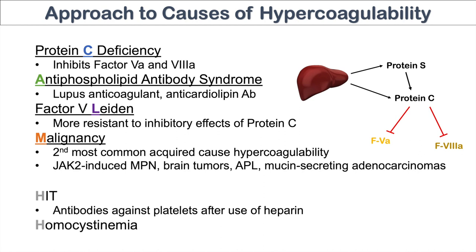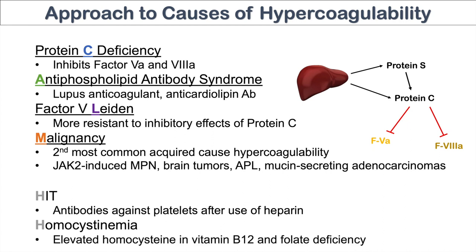The other H is homocystinemia — having high levels of homocysteine in the blood. Homocystinemia can increase the risk of both venous and arterial thrombi. The main conditions to think about are vitamin B12 and folate deficiency, both of which can elevate homocysteine levels and cause homocystinemia, increasing the risk of hypercoagulation.